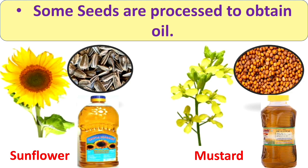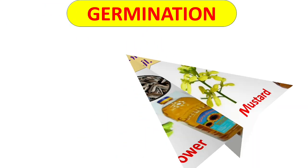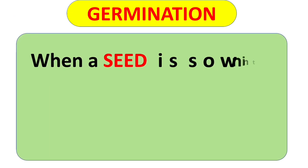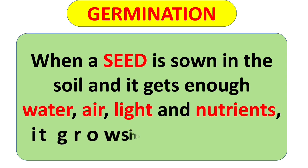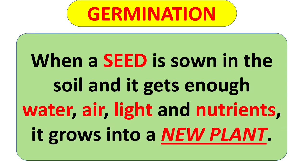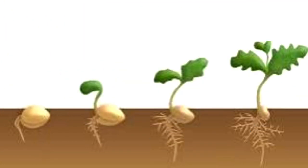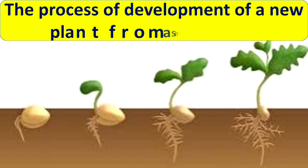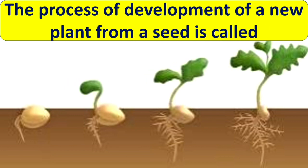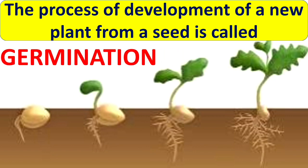Now let's see how a small seed grows into a new plant. When a seed is sown in the soil it gets enough water, air, sunlight and nutrients, and it grows into a new plant. The process of development of a new plant from a seed is called germination. Here we complete our chapter on parts of plants.